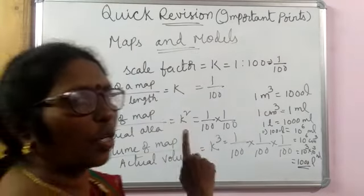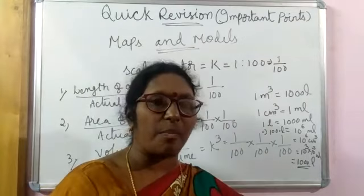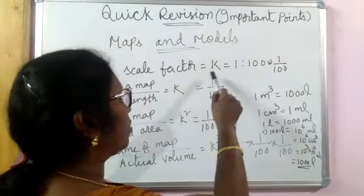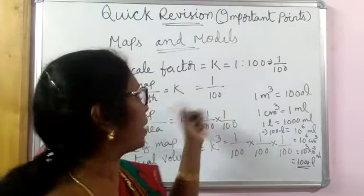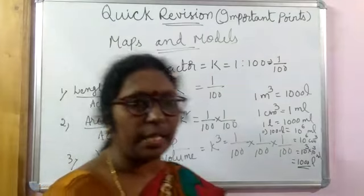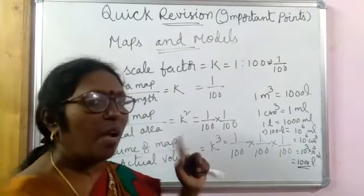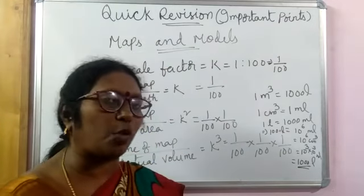One question surely you are going to get, children, from maps and models. Don't confuse. Simply remember: length of map by actual length is K. The K will be proper fraction. Don't multiply this one - actual length by 100. Similarly, map area by actual area is K square. Map volume by actual volume is K cube. Surely you are going to get one question from this.